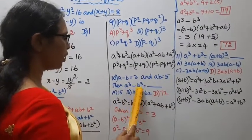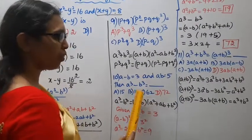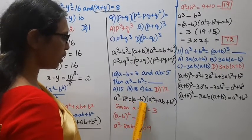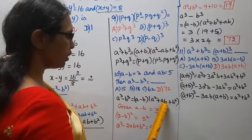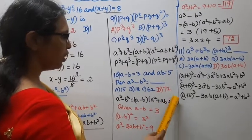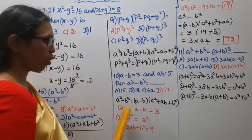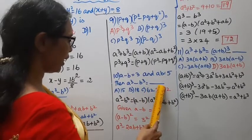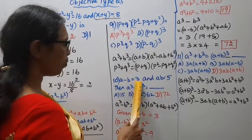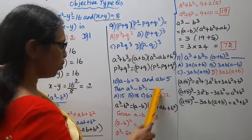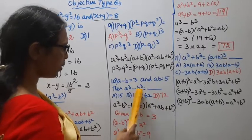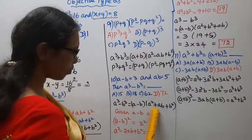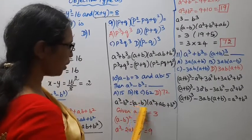Then a cubed minus b cubed equals dash. Using the identity: a cubed minus b cubed equals a minus b into a squared plus ab plus b squared.